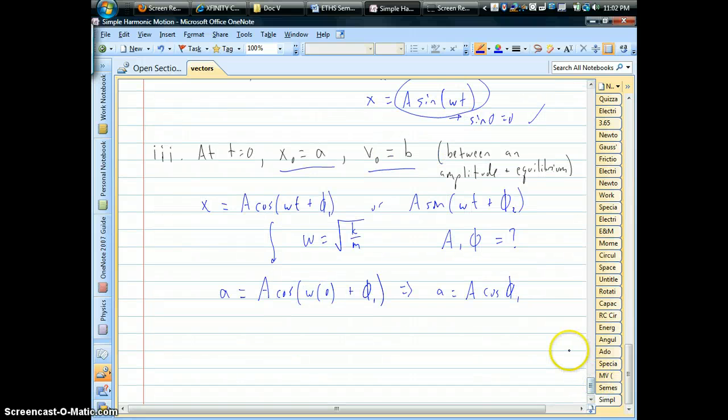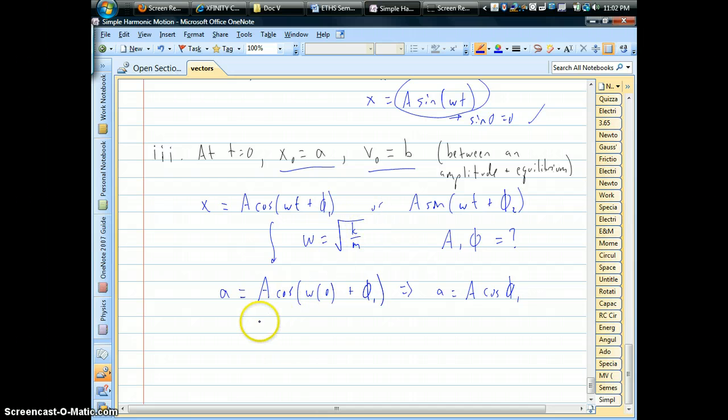Now at the same time, we know the initial speed. Your speed is the derivative of position with respect to time. So if you're using cosine, we could have negative A times omega times sine of omega t plus the phase angle.